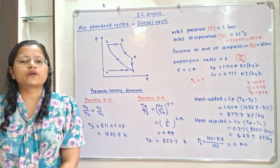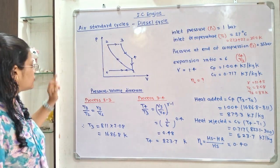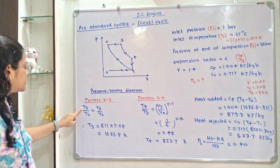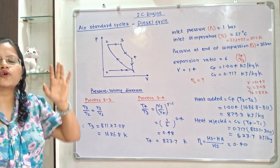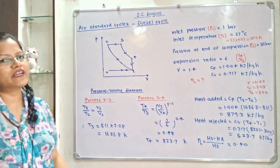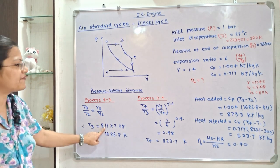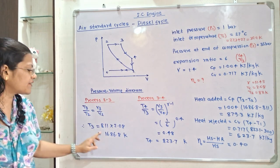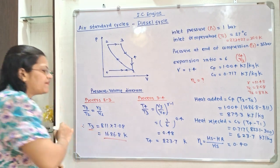Now we will move to process 2 to 3. For this process, we have the relation T3 by T2 equals V3 by V2, which is the cut-off ratio. The cut-off ratio we calculated is 2.08. So T3 equals 2.08 multiplied by T2 (811 Kelvin), giving T3 equal to 1686.8 Kelvin.